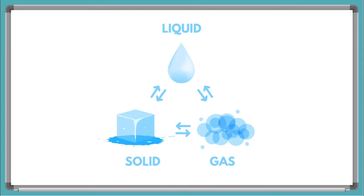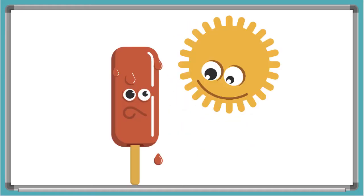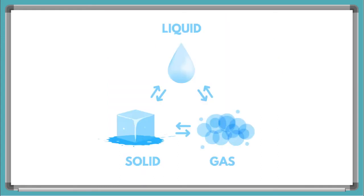We can change the state that matter is in. This is called a transition. A transition is when a substance changes from one state to another, like a chocolate bar turning into a chocolate puddle if left out in the sun. There are four types of transitions.